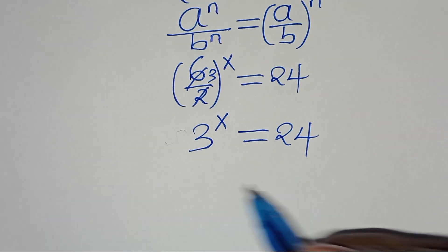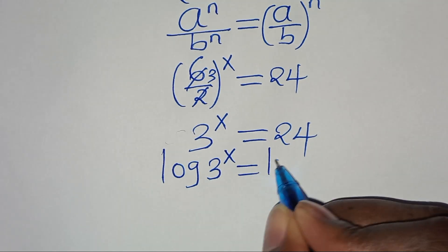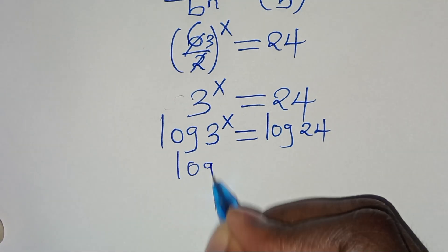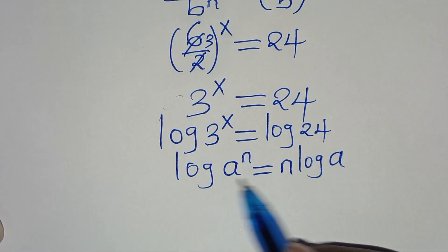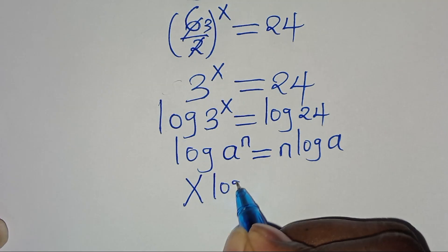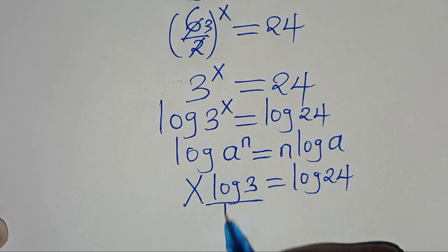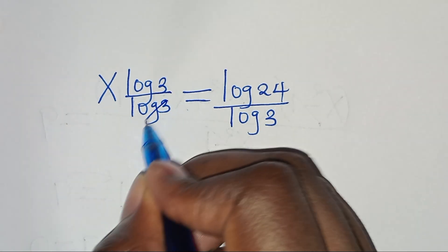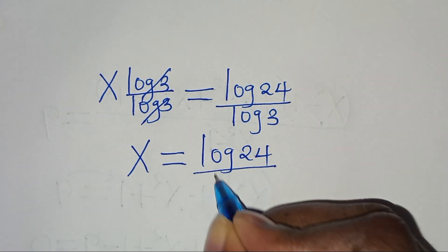To solve for x, we introduce logarithms on both sides, so we have log of 3 to the power of x equals log 24. Since log of 3 to the power of x is in the form of log a to the power of n, which equals n times log a, applying this power property of logarithms gives us x times log 3 equals log 24. Dividing both sides by log 3, we get x equals log 24 divided by log 3.